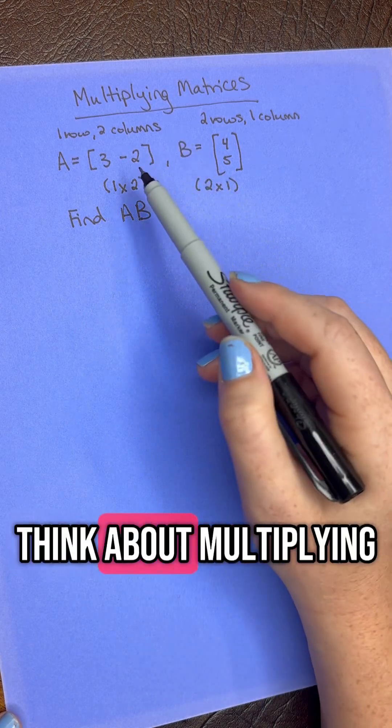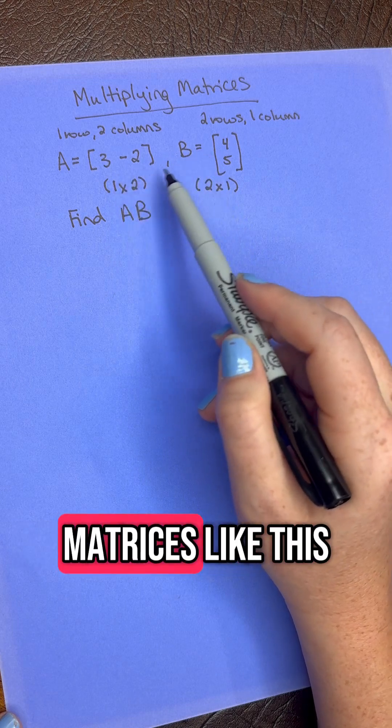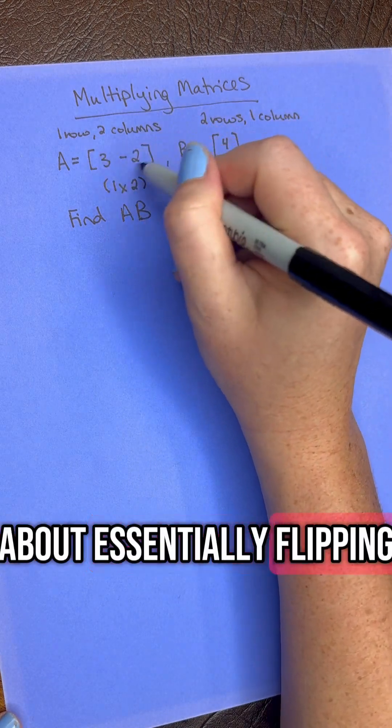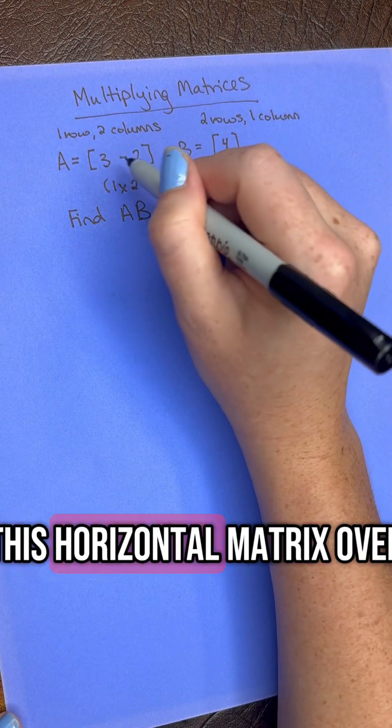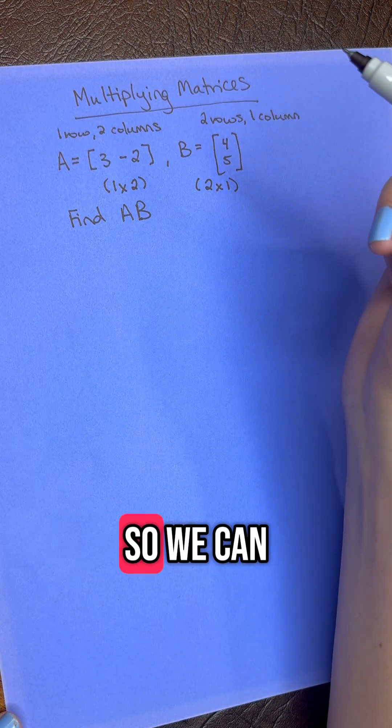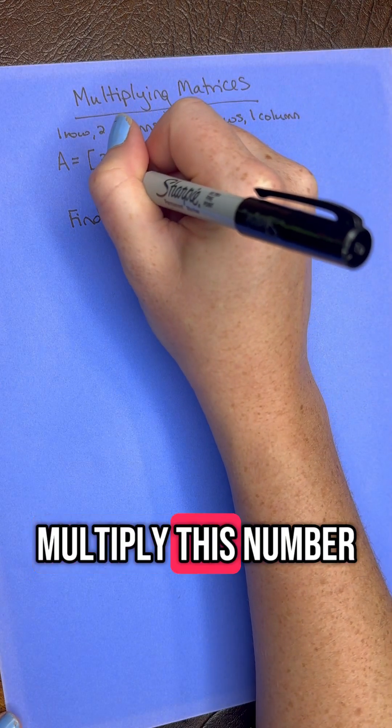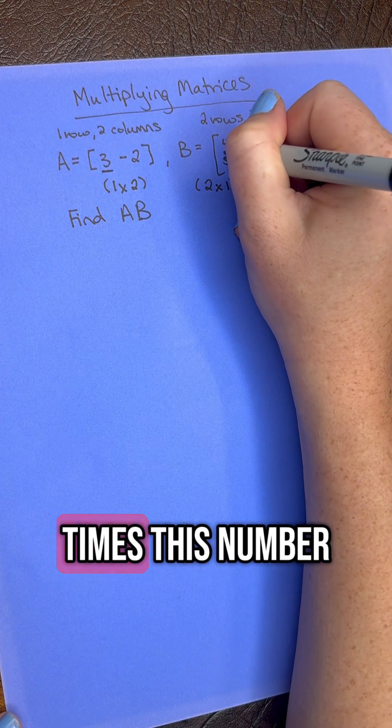So when we think about multiplying matrices like this, we want to think about essentially flipping this horizontal matrix over so we can multiply the numbers. So you're going to multiply this number times this number.